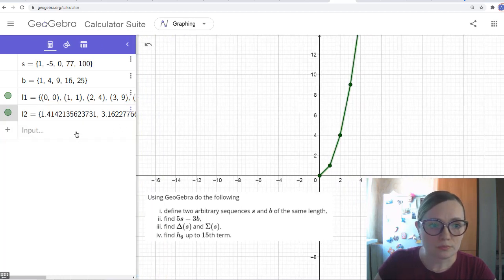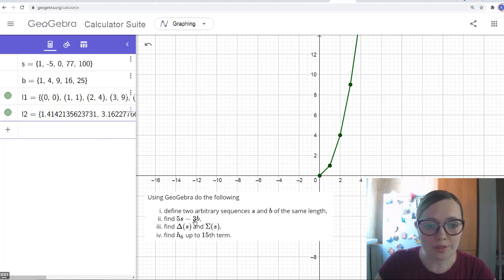And we now are going to solve this problem here. The first one: define two arbitrary sequences, s and b, of the same length, which we already did. So these two sequences are of length five, because they have five terms each. And the second task here, to find linear combination of these sequences. And GeoGebra understands well operations on sequences.